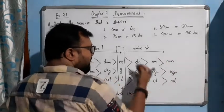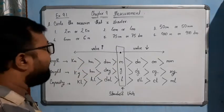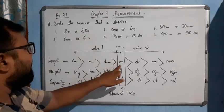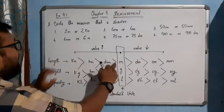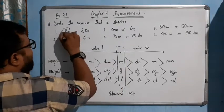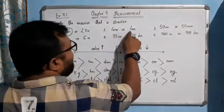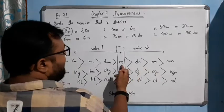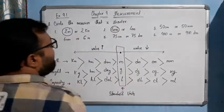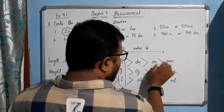So if you move towards the left-hand direction the value increases. Kilometer is on the left-hand side of meter, so kilometer is greater than meter. Now we have to circle the shortest one. For '2 meter and 2 kilometer,' 2 meter is shorter. For '4 centimeter and 4 meter,' centimeter is on the right-hand side of meter so 4 centimeter is shorter.